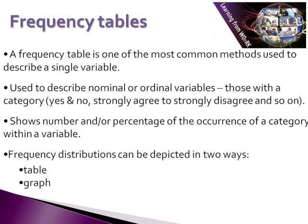Frequency tables are one of the most common methods used to describe a single variable — to conduct univariate analysis. They are used to describe nominal and ordinal variables, so those within a category, such as yes or no, or from strongly agree to strongly disagree. Frequency tables wouldn't be very useful for scale variables — interval and ratio variables — as you would just end up with a very long list of, say, height or weight measurements.